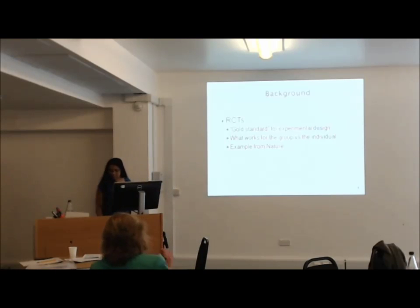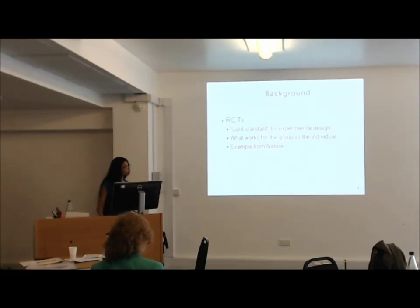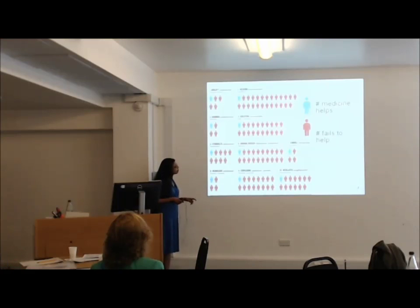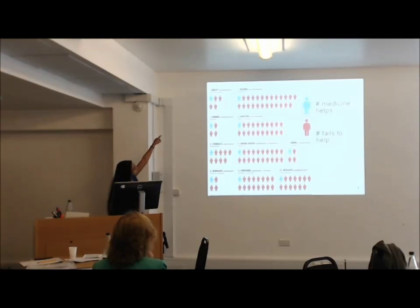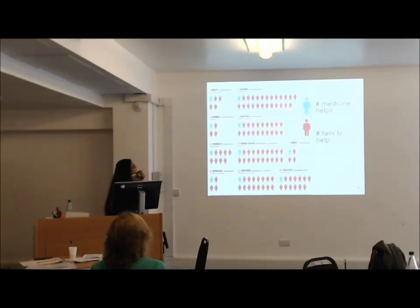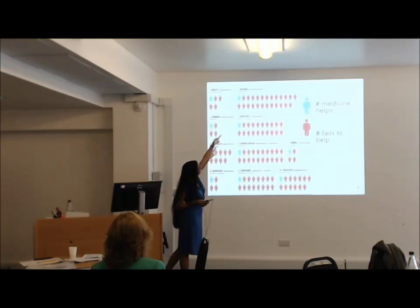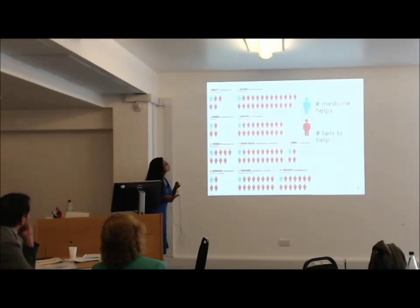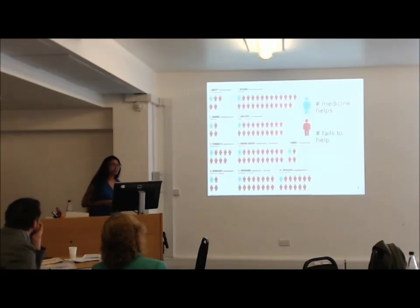I want to give an example from Nature. This graph went a little bit viral when it first came out. These are the ten most commonly consumed drugs in America. The blue represents the number of people the medicine helps; the pink represents the number of people it fails to help. These are mostly products of randomized control trials. One out of 25 people is what the second most commonly consumed drug helps, so you're actually better off not taking the drug because it'll probably have a lot of side effects.